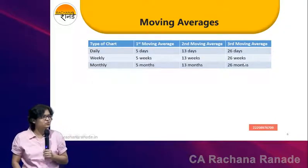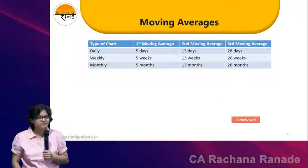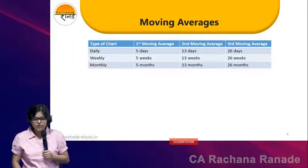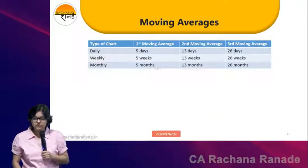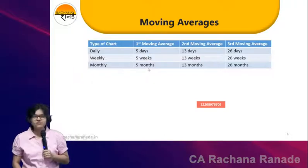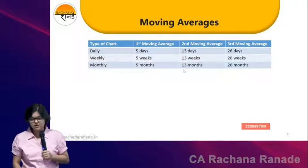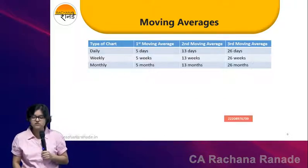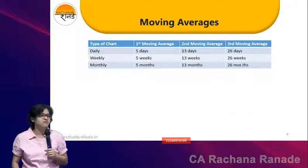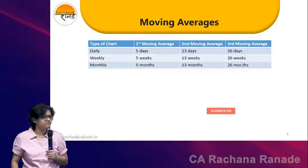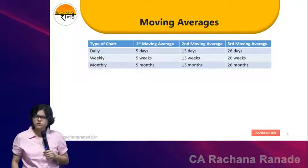26 weeks average — this is almost half a year data. And if I am on a monthly chart, this is not too much: 5 months average, 13 months average and 26 months average. Is this okay?